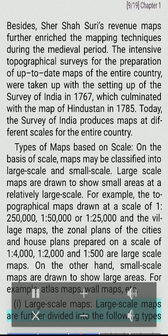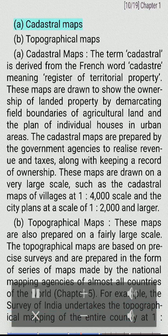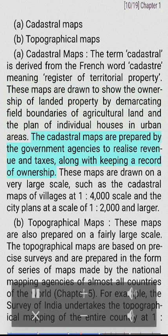Large-scale maps are further divided into the following types: A. Cadastral maps and B. Topographical maps. Cadastral maps: The term 'cadastral' is derived from the French word 'catastre' meaning 'register of territorial property.' These maps are drawn to show the ownership of landed property by demarcating field boundaries of agricultural land and the plan of individual houses in urban areas. The cadastral maps are prepared by government agencies to realize revenue and taxes, along with keeping a record of ownership. These maps are drawn on a very large scale, such as the cadastral maps of villages at 1:4,000 scale and the city plans at a scale of 1:2,000 and larger.